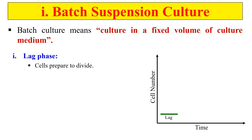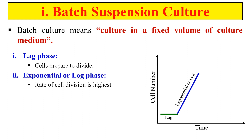During the lag phase, cells are not dividing but they are metabolically active — they are preparing themselves to divide, producing metabolites. Growth is not occurring, but cells are highly metabolically active. The second phase is the exponential or log phase, during which cells divide at the highest rate.